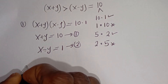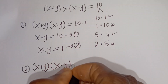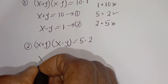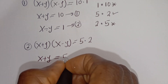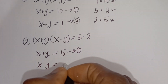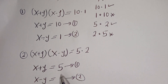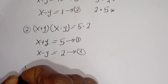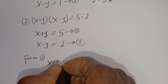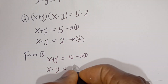For Case 2: (X plus Y)(X minus Y) is equal to 5 multiplied by 2. So X plus Y is equal to 5 — this is equation 1. And X minus Y is equal to 2 — this is equation 2. These are simultaneous equations. Let's solve them using the elimination method. From Case 1: X plus Y is equal to 10, and X minus Y is equal to 1.